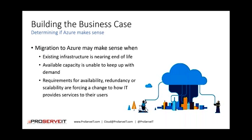The other use case that we see a lot of conversation around is when business needs grow around availability, redundancy, or scalability. Maybe a line of business app has only had a single server supporting it to date. We need to look at HA for that application or DR for that application. Or, much like that second scenario, the use of that business app is growing faster than what was anticipated by IT. These can all be great examples of where Azure can be used to augment that existing on-prem infrastructure.